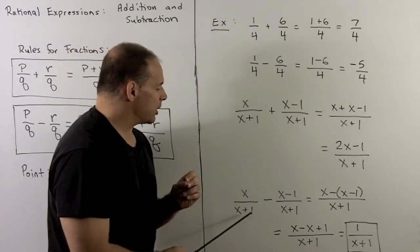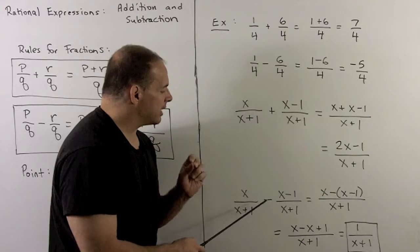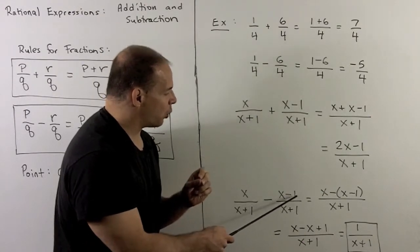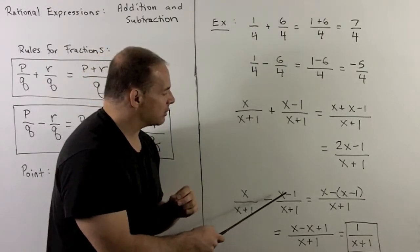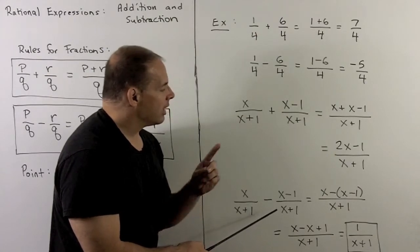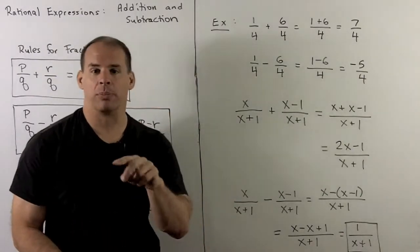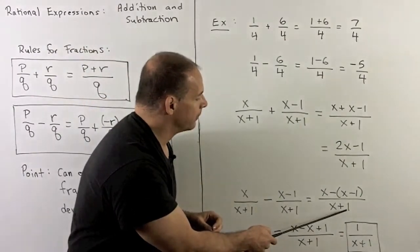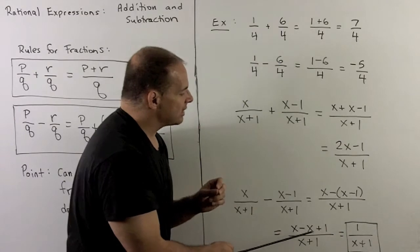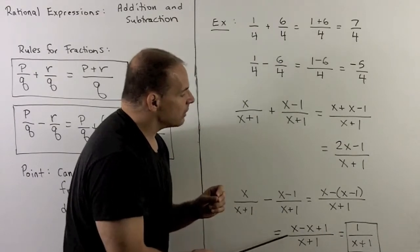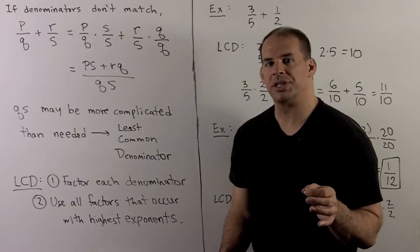Something to be careful with: let's take the difference X over X+1 minus X minus 1 over X+1. A common error is to apply the minus sign only to the X but not the minus 1. What I'd like to do is rewrite this as plus minus X minus 1 in parentheses. We have like denominators, so we combine to get X minus (X minus 1) in parentheses over X+1. Distributing correctly, applying the minus sign to each term, gives minus X plus 1. The X's cancel and we're left with 1 over X+1.